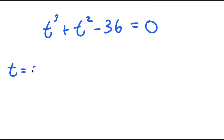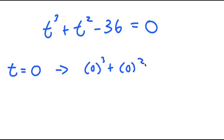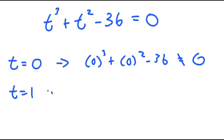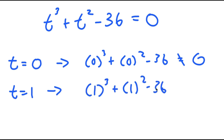I'm going to first start with t equals 0. If t equals 0, I get 0 to the power of 3 plus 0 squared minus 36, and this does not equal 0. Now I'm going to try t equals 1. If t equals 1, I get 1 to the power of 3 plus 1 squared minus 36. 1 plus 1 is 2, 2 minus 36 is negative 34 — that does not equal 0.